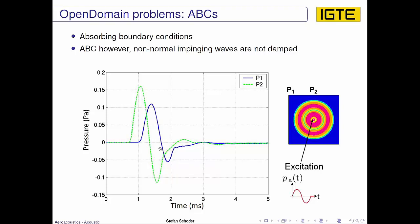But nevertheless, we have some reflections, and these reflections will be mitigated by the next theory or model, which is the PML. And the PML is not as cost efficient as the ABC—it is more costly during the computation, but it yields overall a much better result.